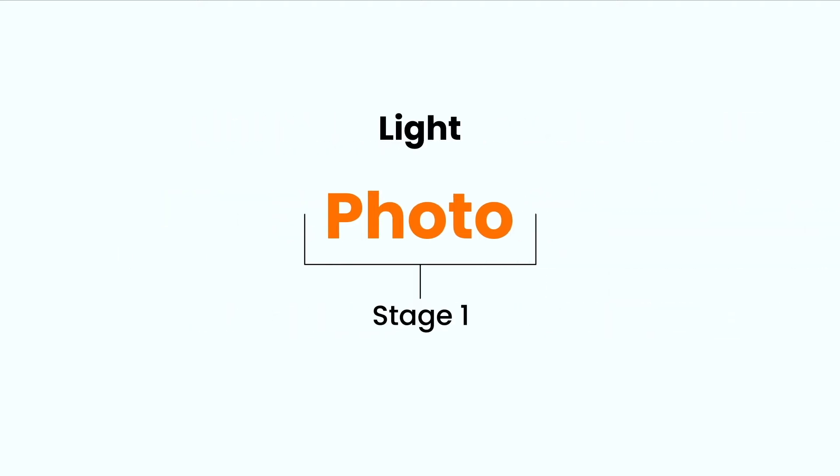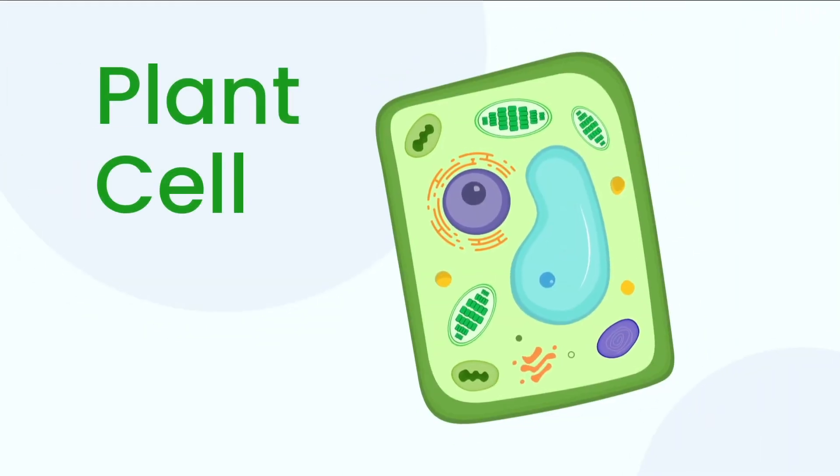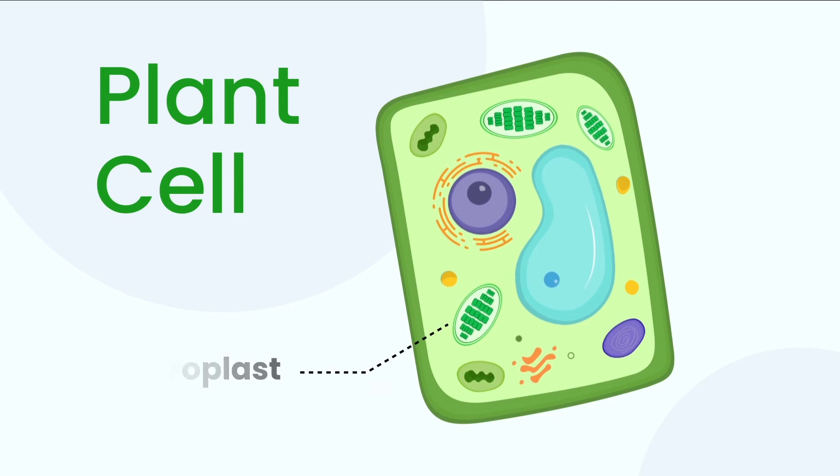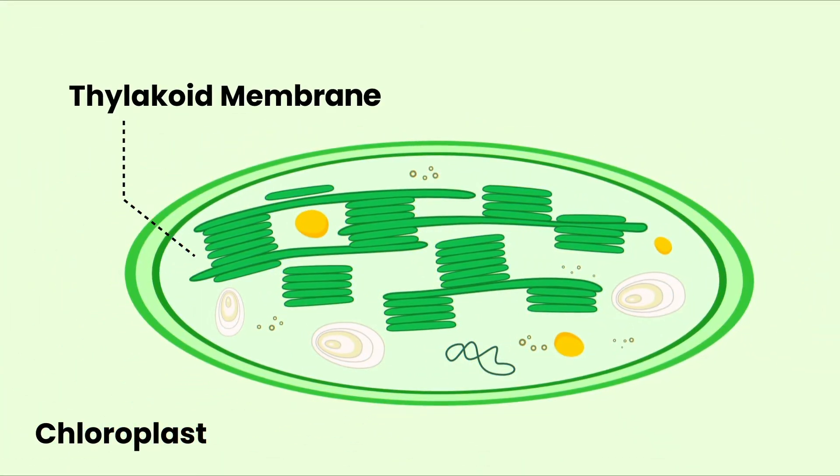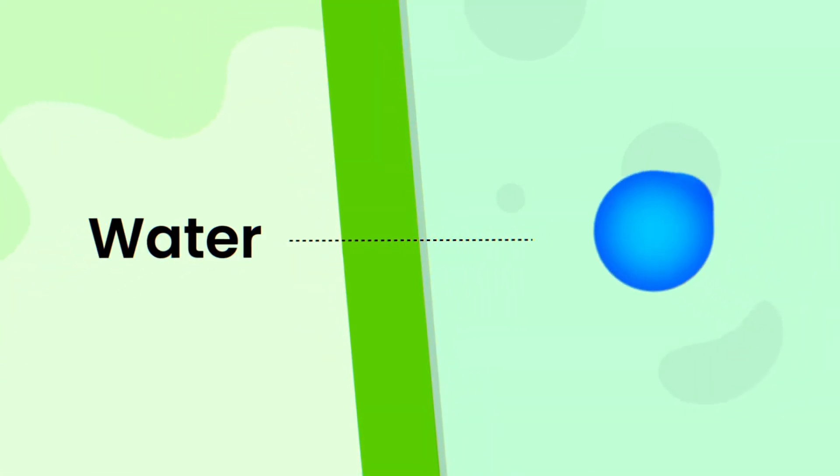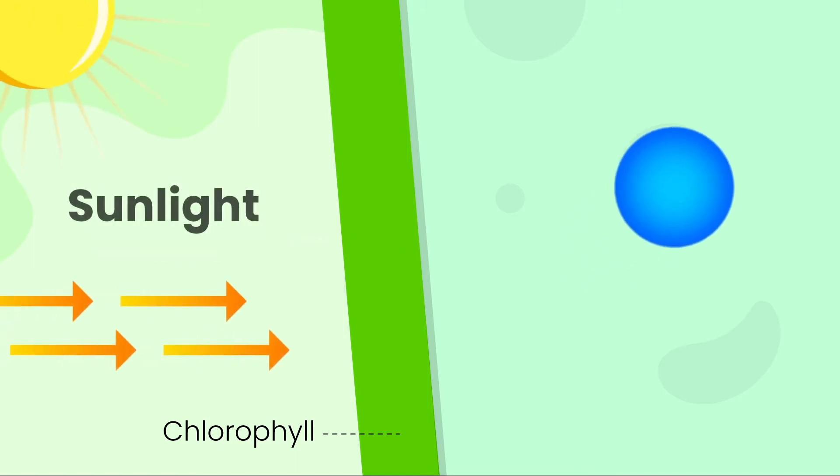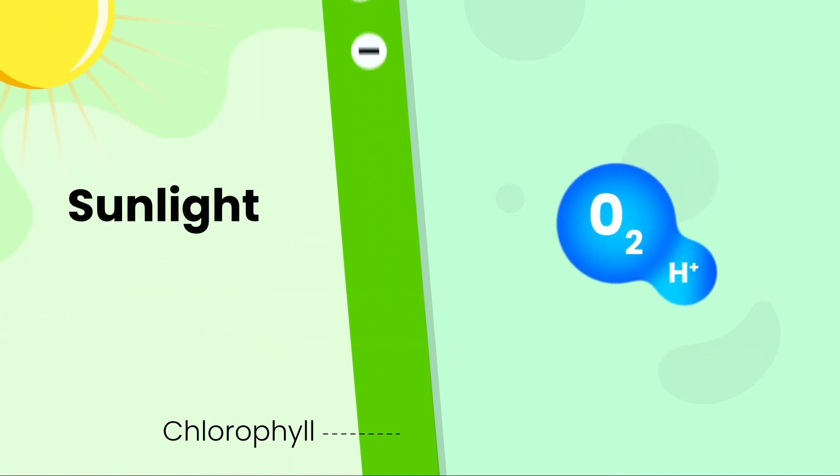Let's talk about stage one, which is photo. This is a plant cell and we have chloroplast inside it. These structures inside chloroplast are called thylakoid membrane. Chlorophyll is present on the surface of this particular membrane. When water reaches chlorophyll, hydrogen and oxygen are separated with the help of sun's light energy.